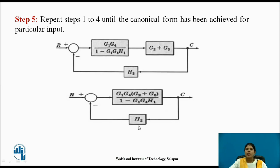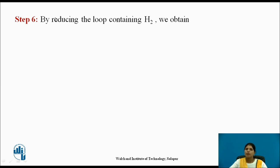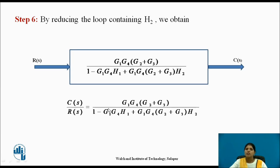Here again H2 is in feedback with this block, and a minus sign is present. So use the formula for eliminating the feedback loop — apply rule 4 for this. By reducing the loop containing H2, we obtain the canonical form of the given block diagram. Here R(S) is the input and C(S) is the output. The transfer function C(S) divided by R(S) gives the transfer function of the system.